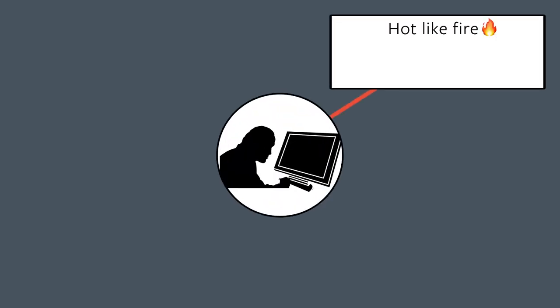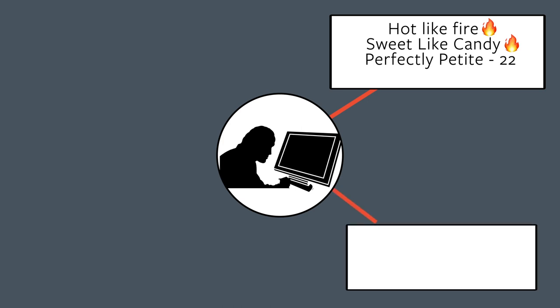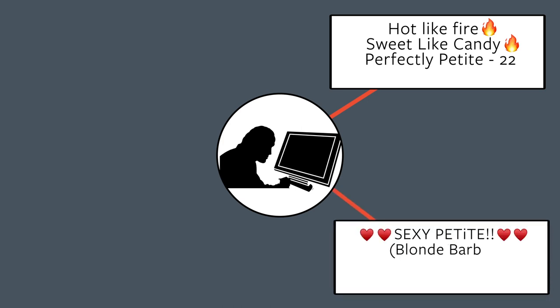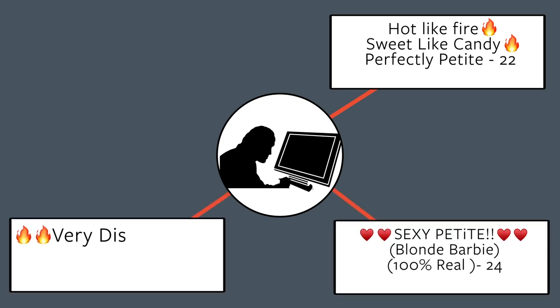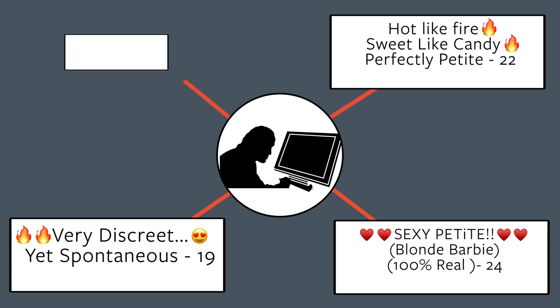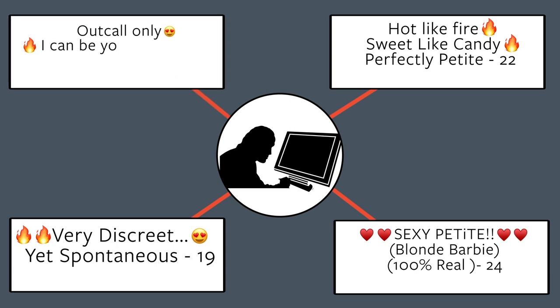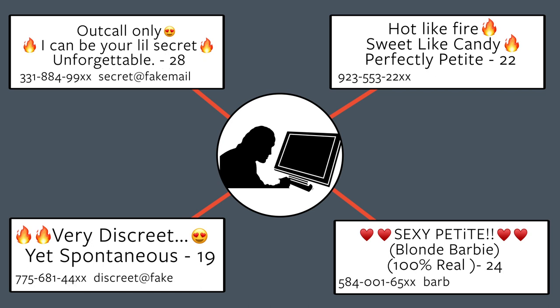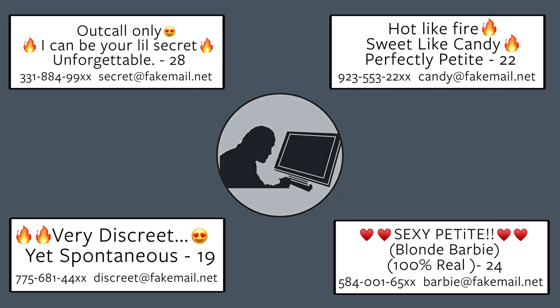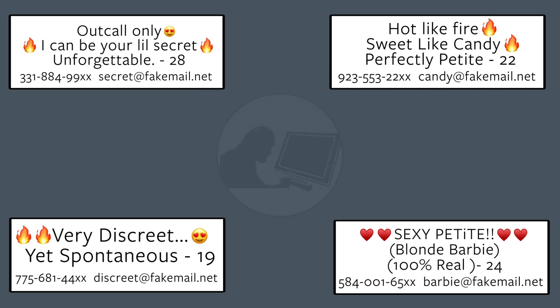A trafficker posting advertisements about the girls that he is in charge of would want to disguise that information somehow — so that the girls don't appear to be minors, and that these are all independent people working separately. To that end, you have traffickers using burner phones as the contact information. Obviously you can switch email addresses with very little cost — doing things like that in order to try and minimize the connection between these ads.